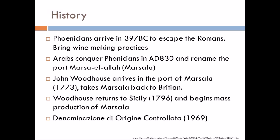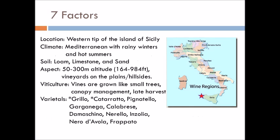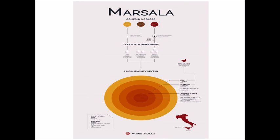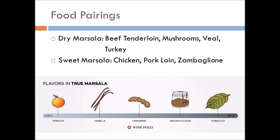Southeastern France on the Atlantic Ocean. The Gironde, the Dorgon, and the Gironde Rivers of southeastern France along the Atlantic Ocean.